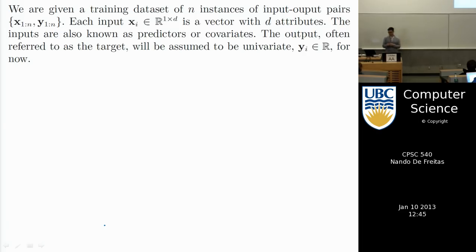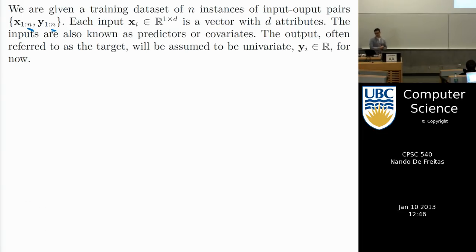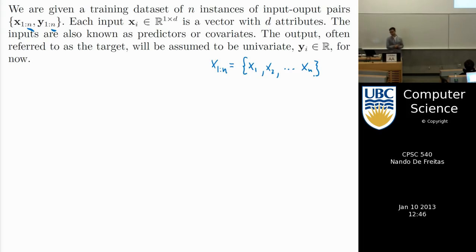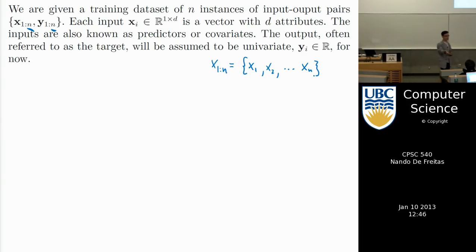Let's set up the notation. I'll assume we have N inputs and N outputs, where N indicates the number of instances. When I write x_{1:N} I mean the set {x_1, x_2, ..., x_N} — that's essentially MATLAB or Python notation. I'll assume each input has D components. For example, x could be the height and weight of a person, so x_1 is height and weight for person 1, x_2 for person 2, and so on. N would be the number of students in the classroom, and D would be 2.